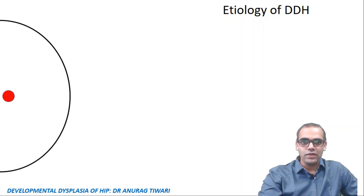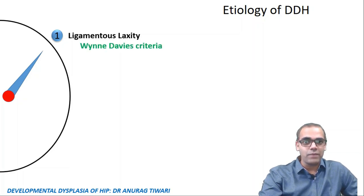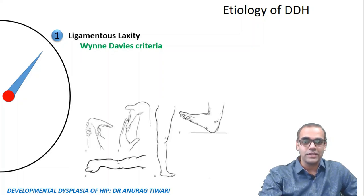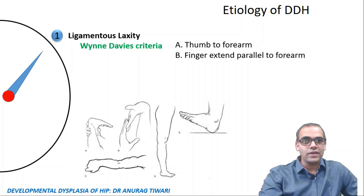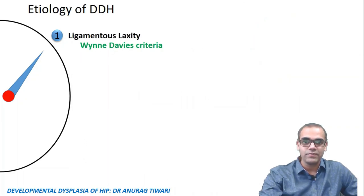Various hypotheses have been given for DDH causes. The first and most important is ligamentous laxity — patients with generalized laxity disorder are more prone to develop DDH. To detect this, we use the Beighton-Davis criteria, which has five parameters: thumb to forearm apposition, finger extension parallel to forearm, elbow hyperextension more than 15 degrees, knee hyperextension more than 15 degrees, and ankle dorsiflexion more than 60 degrees.